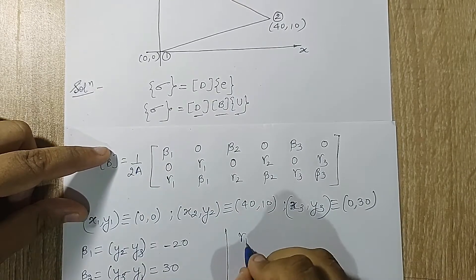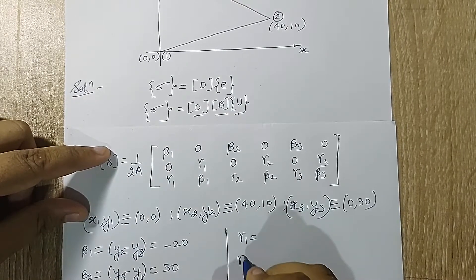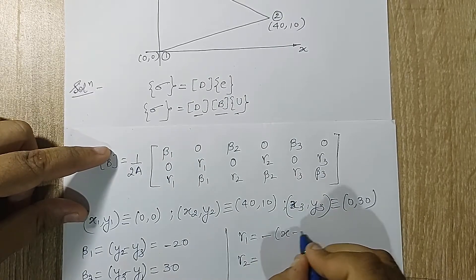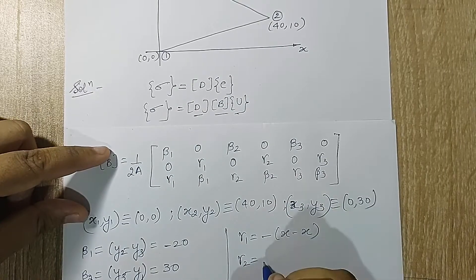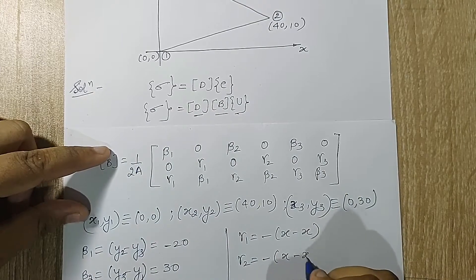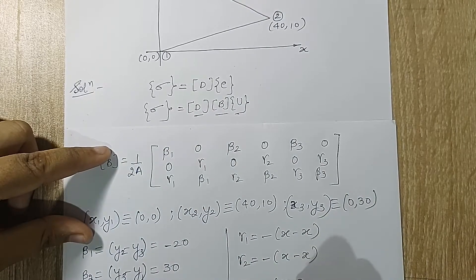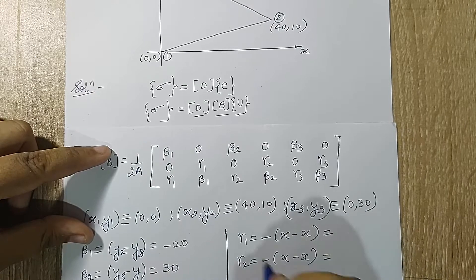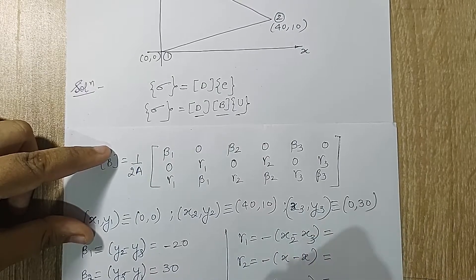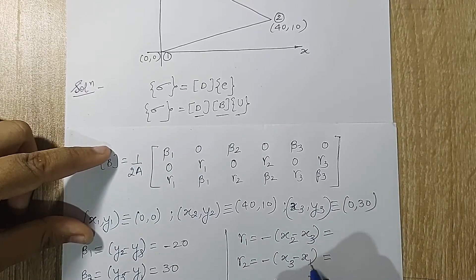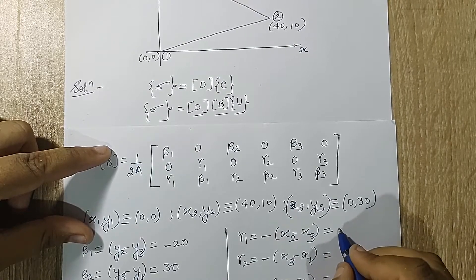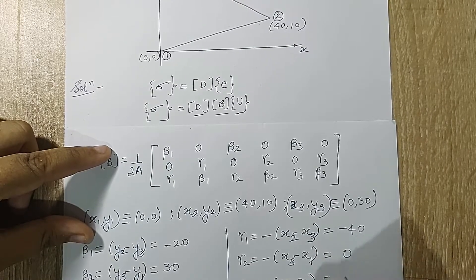Next I calculate gamma1, gamma2, gamma3 — this is the negative difference of x terms, taken cyclically. When I solve this I get minus 40, 0, and 40.